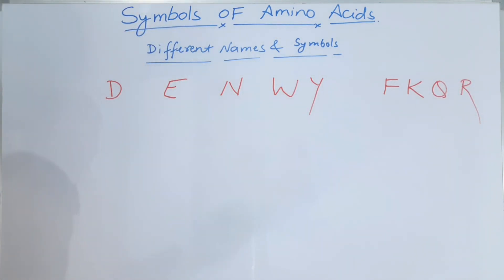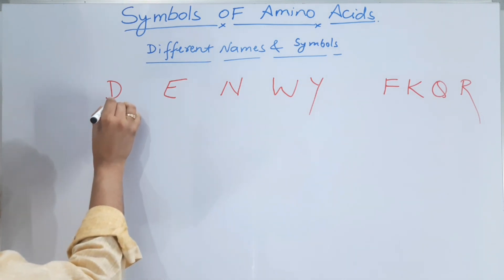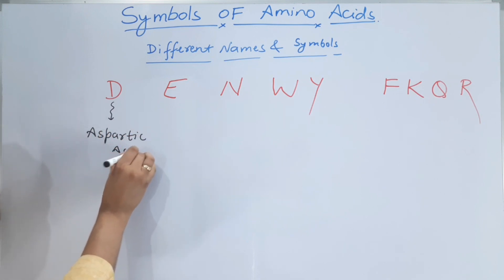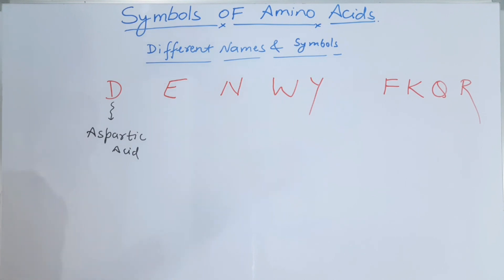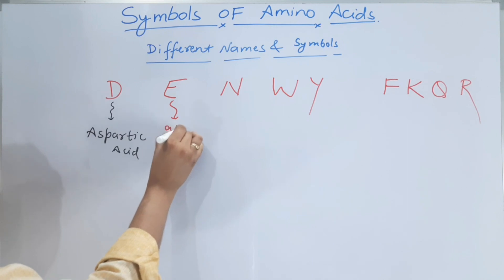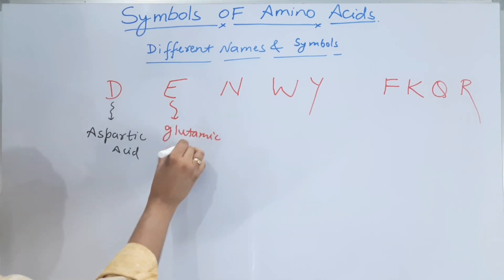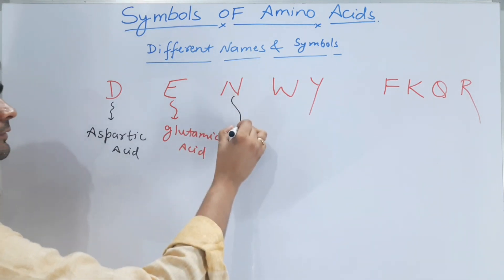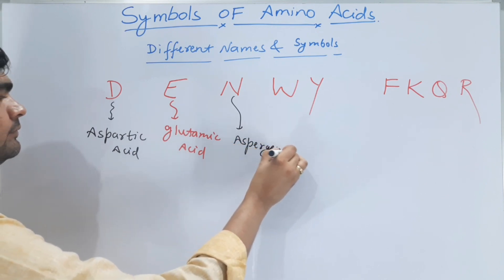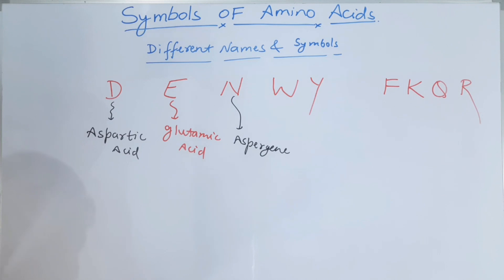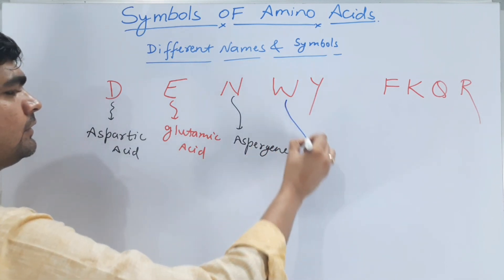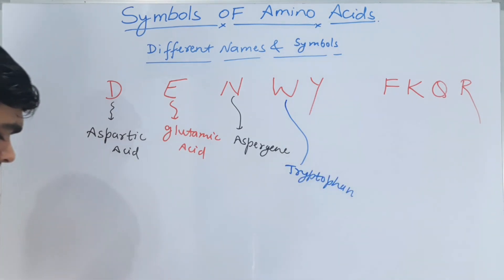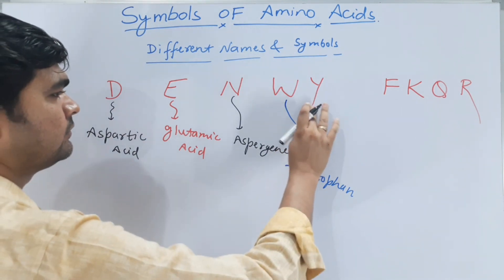Now let's decode it. From Denvi: D is for aspartic acid. E is for glutamic acid. N is for asparagine. W is for tryptophan. And Y is for tyrosine.